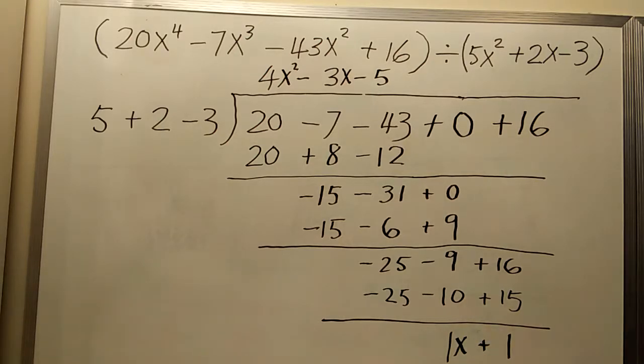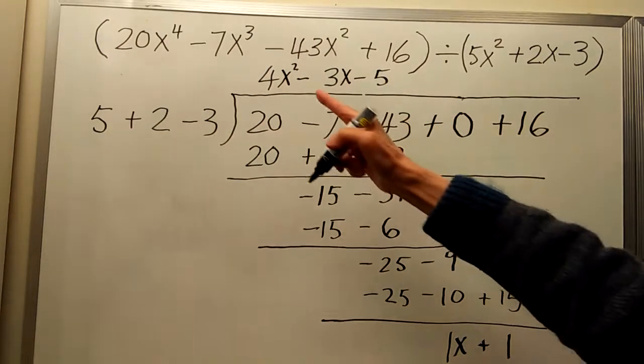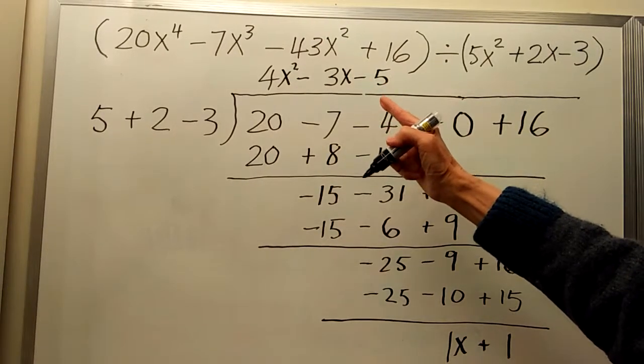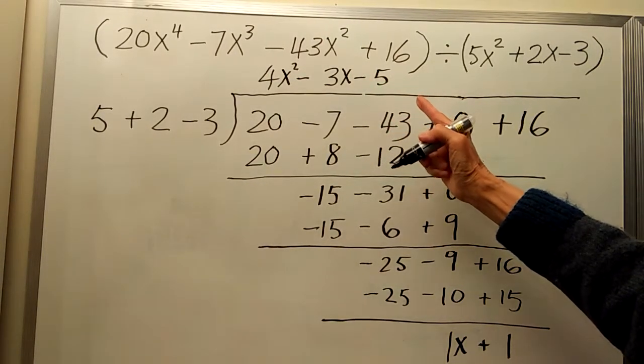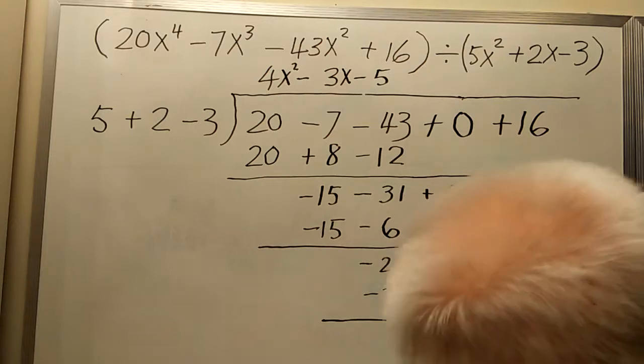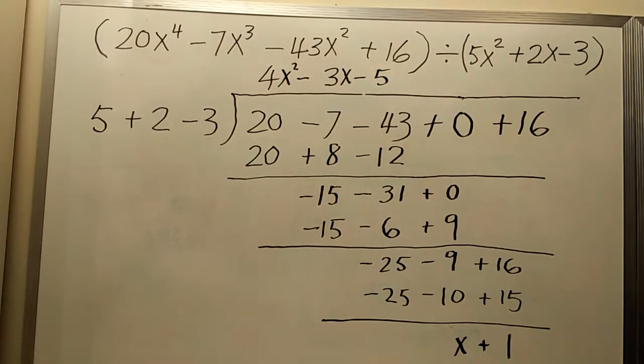So our result is: the quotient is 4x² minus 3x minus 5, and the remainder is 1x plus 1. I don't need to write the 1, so I can erase the 1. The remainder is just x plus 1.